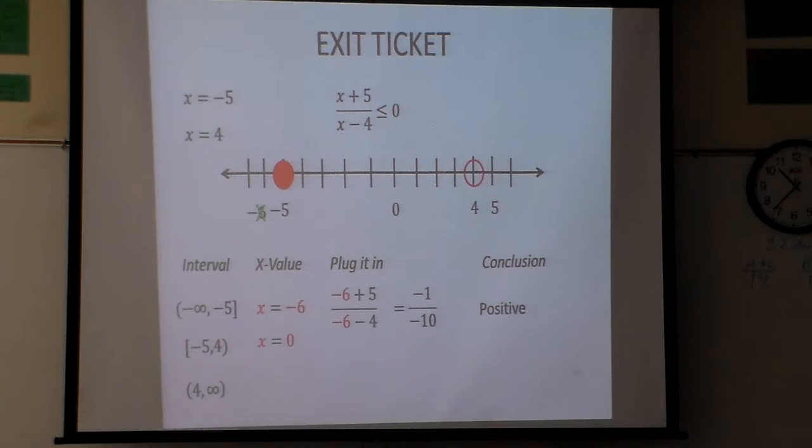So now let's go to my second one here. And remember, here I picked 0. So I'm going to put 0 in. Well, I love a 0 because that just means I have 5 over negative 4, right? And that is a negative. And so those values are good. So I know the numbers between there are good.